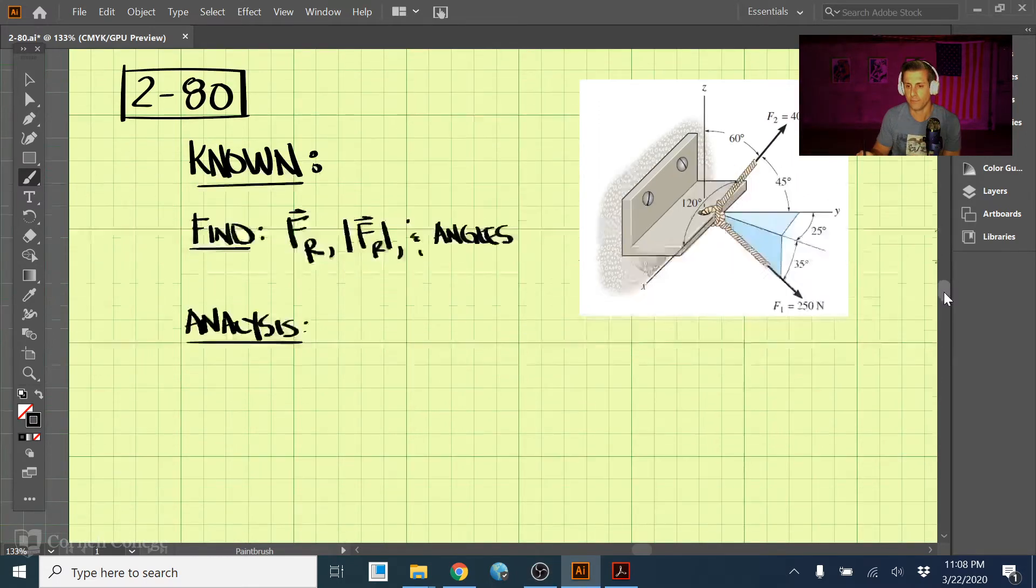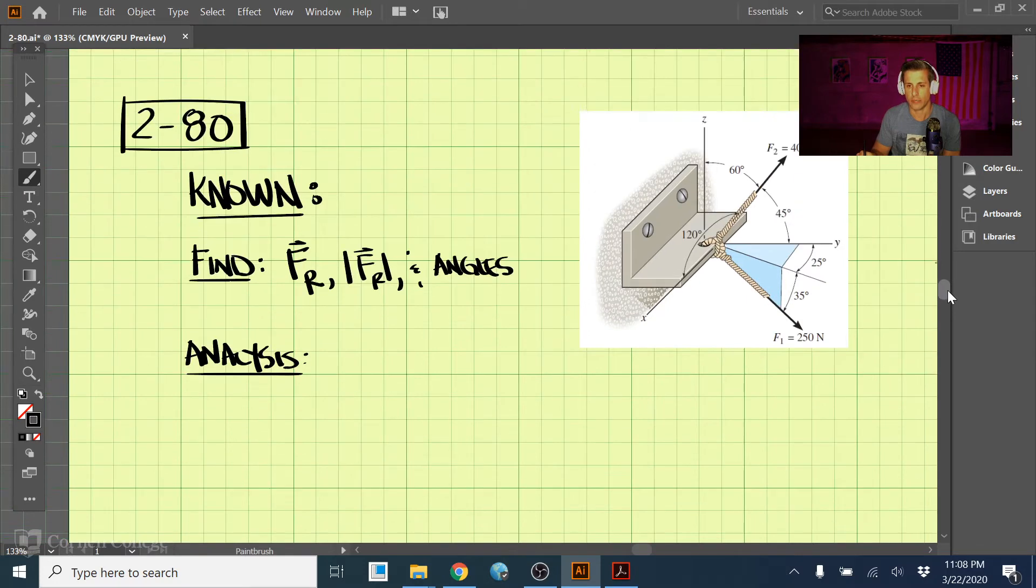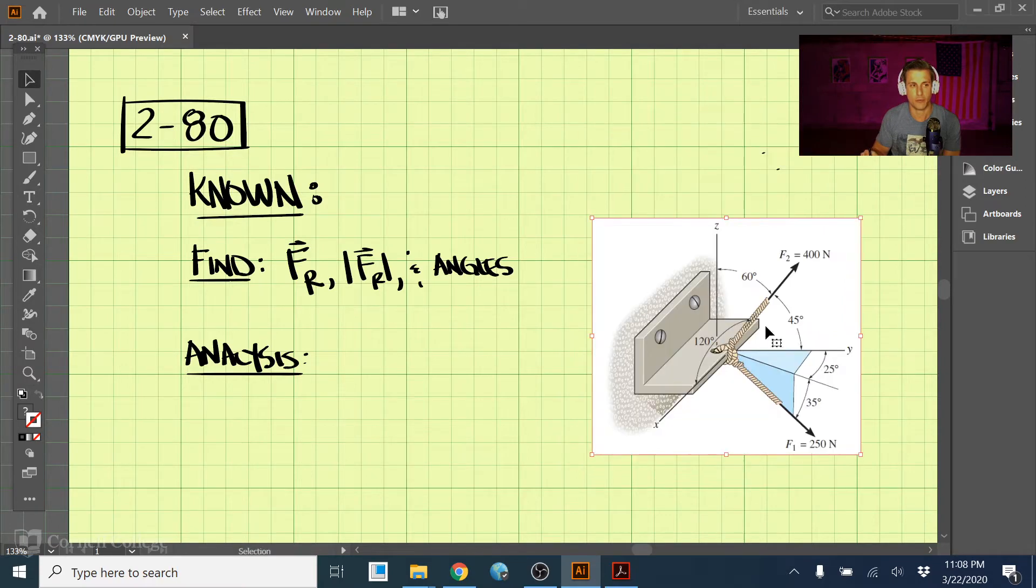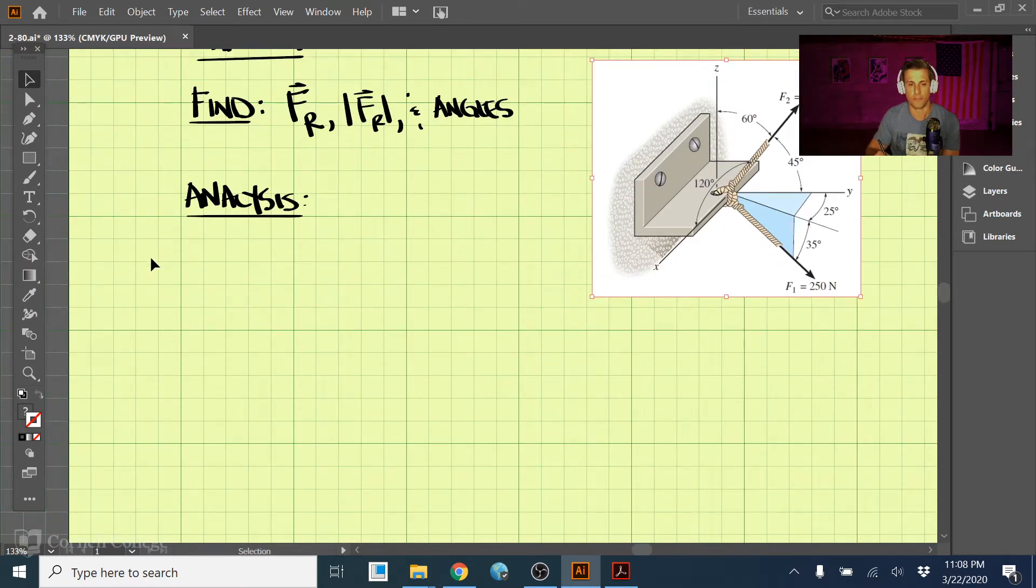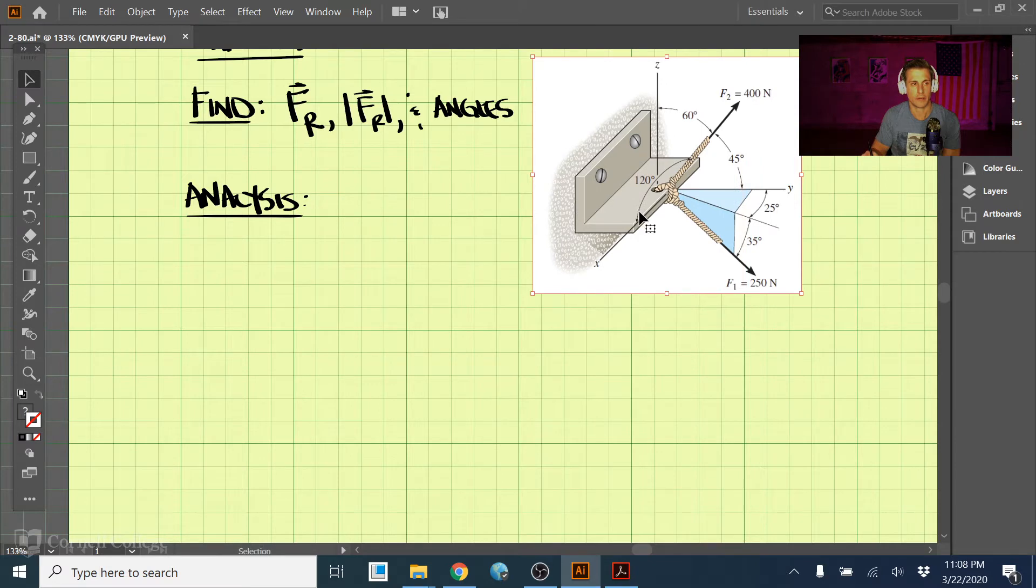Okay, so I'm going to make sure I can still see my image here, so let me move that down a little bit. All right, about right there. So let's make sure you can see that too. Okay, let's get started here. So we need to express these first in Cartesian vector notation.